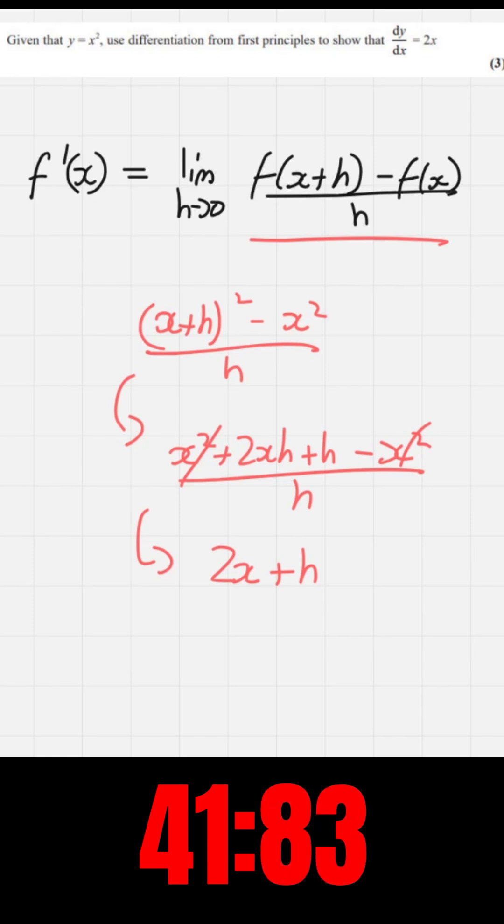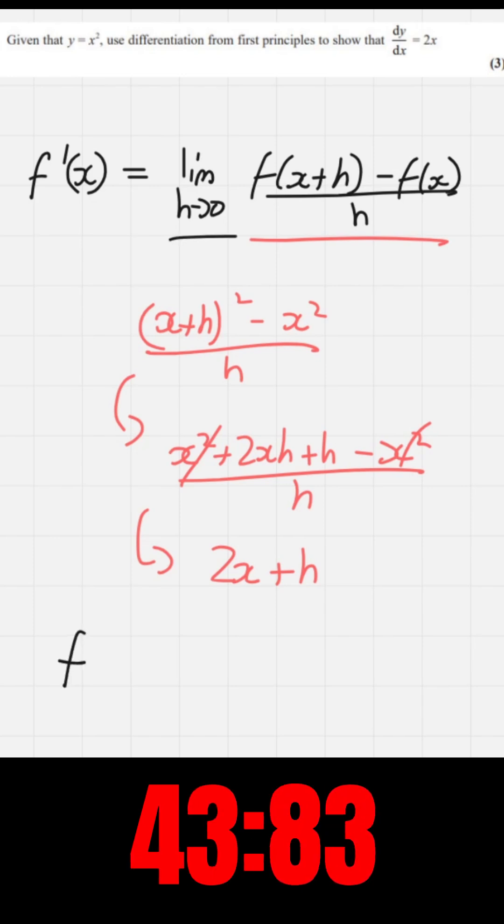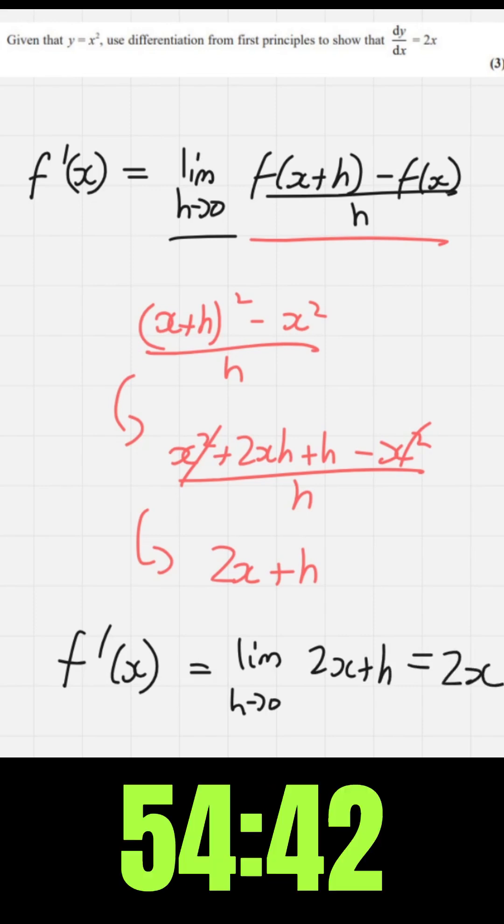Using the limit mentioned above, we can find that f of x derivative equals limit of h to zero, 2x plus h. Taking that limit, we find it to be 2x as shown in the question.